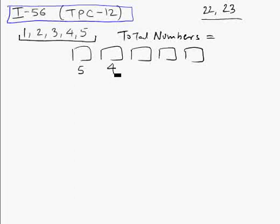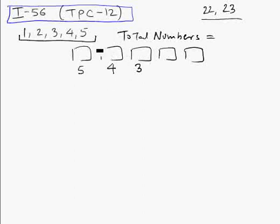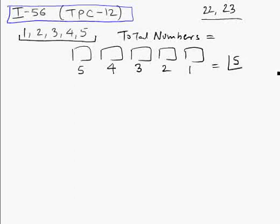After filling the first box, we can fill the next box in four ways, because we've already used one of the five digits. Similarly, the next box can be filled in three ways, then two ways, then one way. So the total number of five-digit numbers that can be formed is 5 factorial, which equals 120.